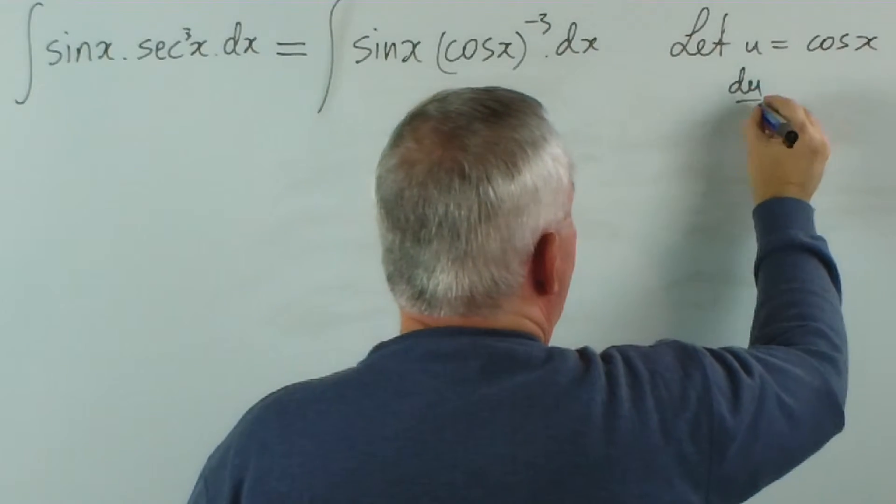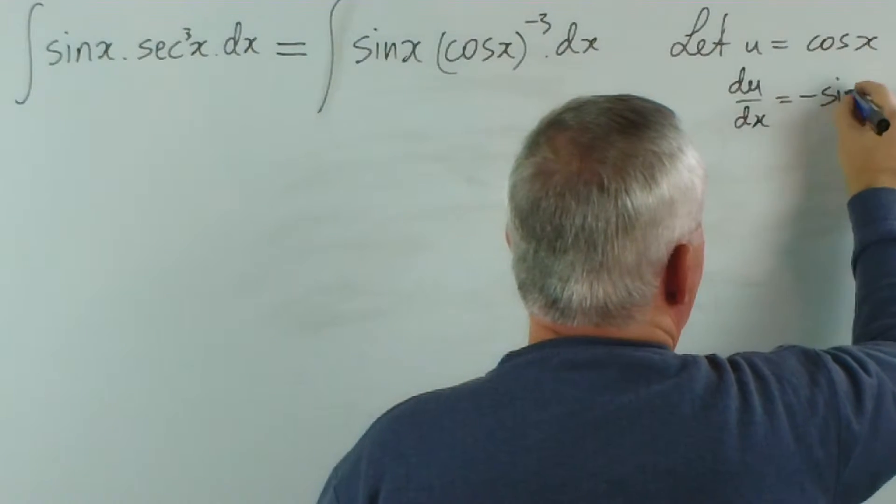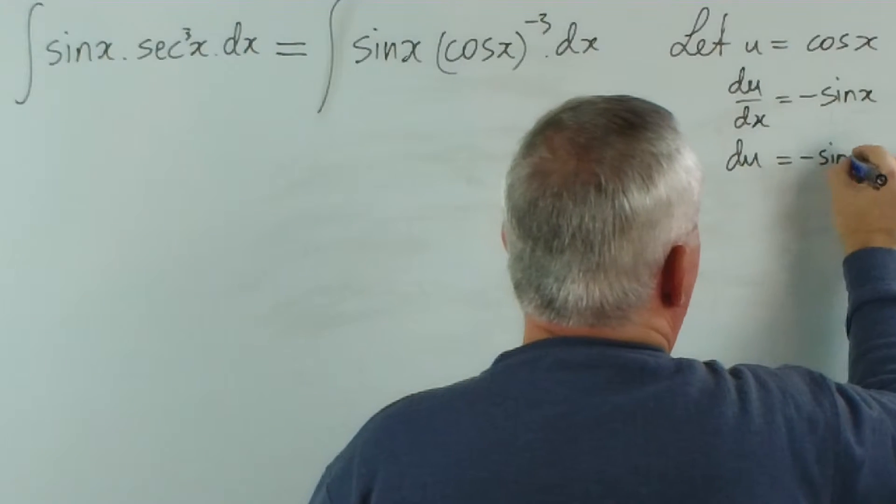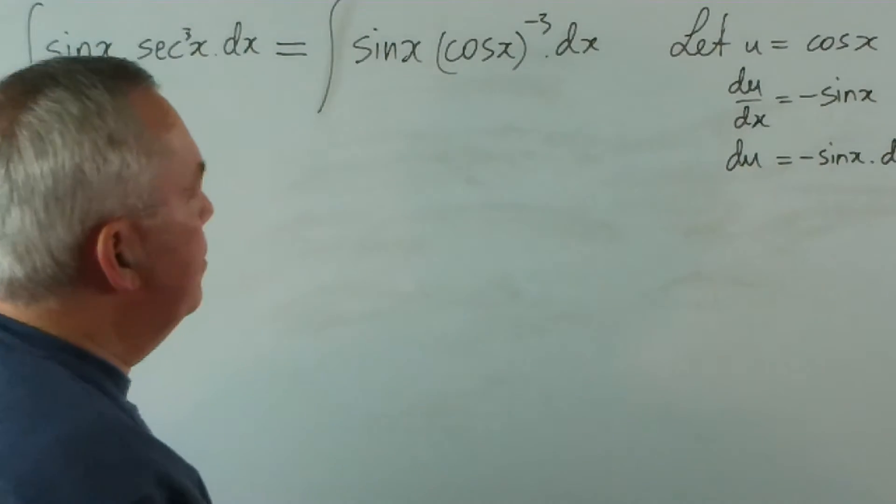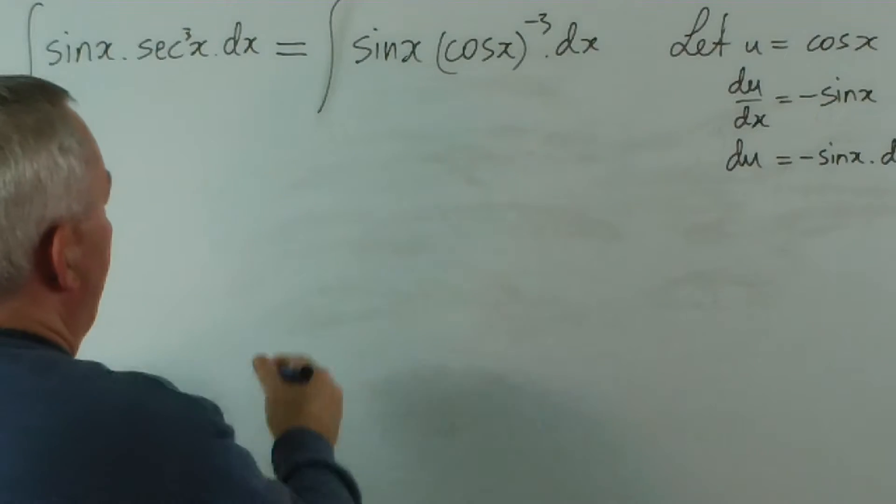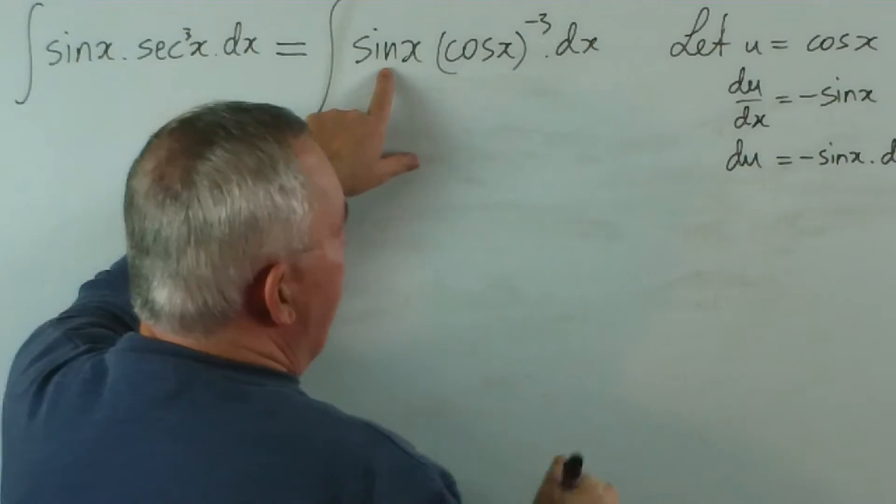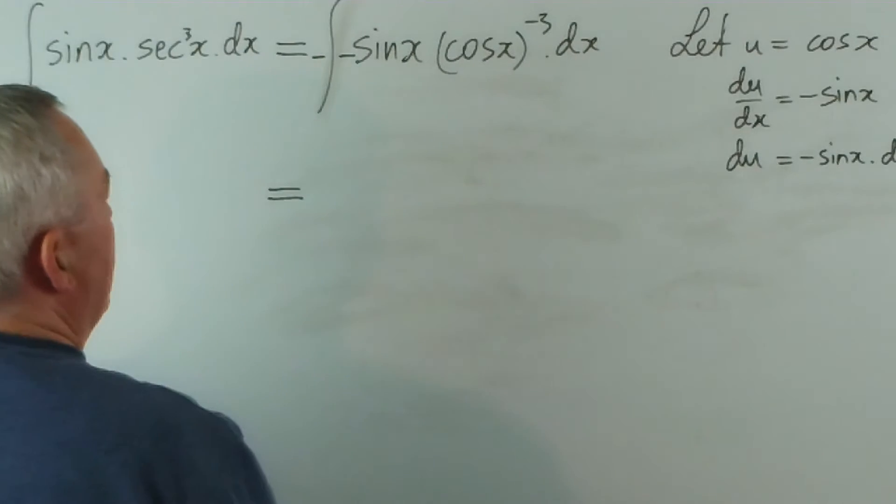So du dx will be the derivative, cos x is negative sin x. So du will be negative sin x dx.